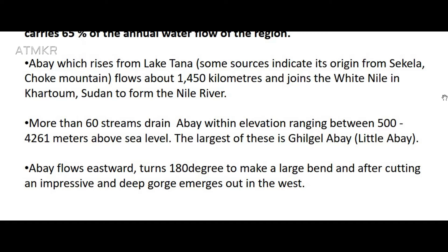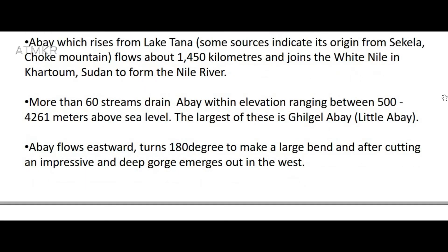The largest of Abbae's tributaries is Gilgel Abbae, followed by Little Abbae. Abbae flows eastward, then turns 180 degrees to make a large bend, and after cutting an impressive and deep gorge, emerges out in the west.